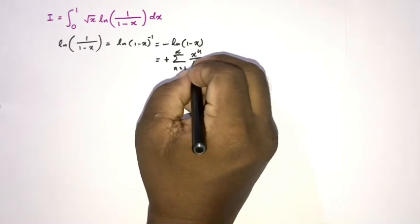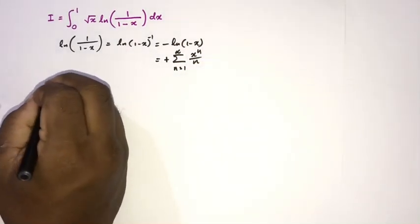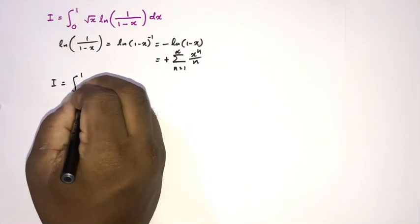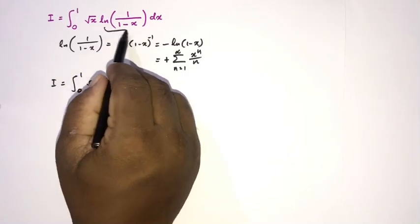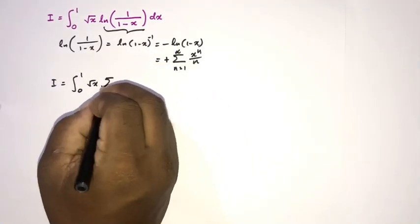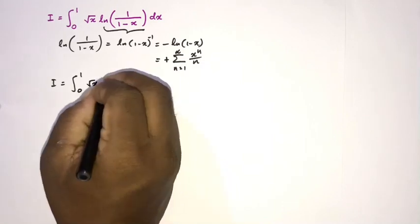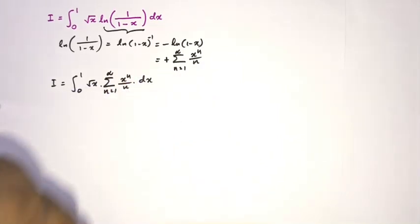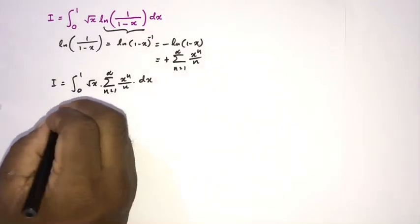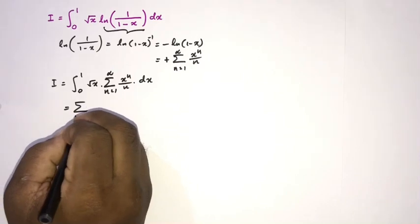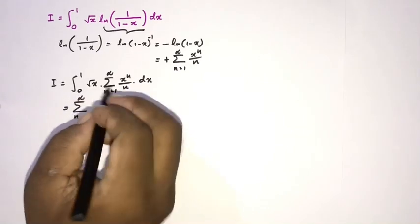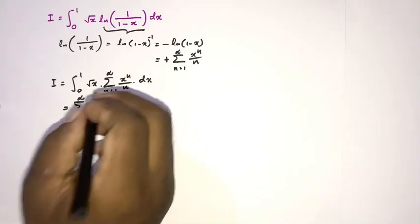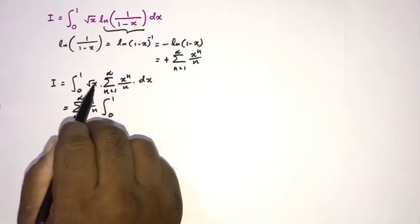So we can write I equals the integral from 0 to 1 of the square root of x times the infinite sum from n equals 1 to infinity of x to the n over n, dx. We can then switch the sum and integral signs. Inside the integral we have x to the n times x to the one half, which we can write as x to the (n plus one half).